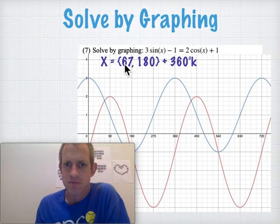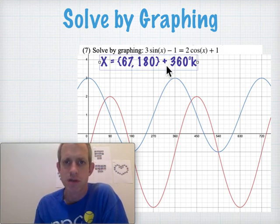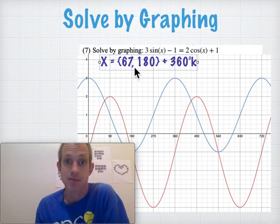So here's our picture. Our answer is x could be 67 or 180, and then we can add 360s to it. Technically, you could subtract 360s too. So it wouldn't hurt to write plus or minus there. But that's solving by graphing. Pretty easy once you get the hang of it.